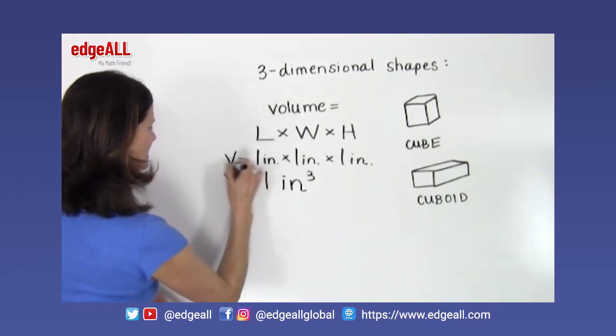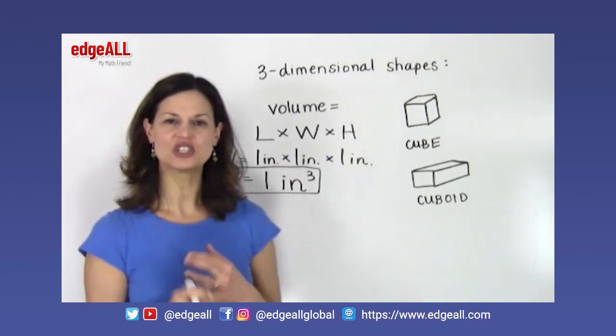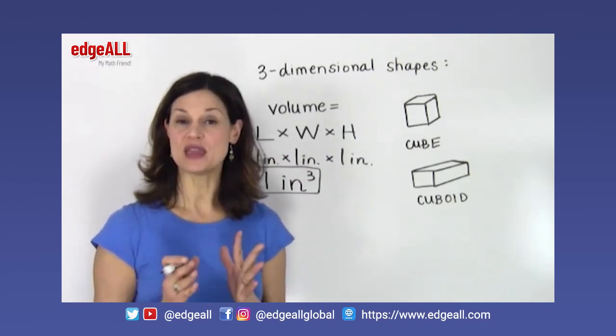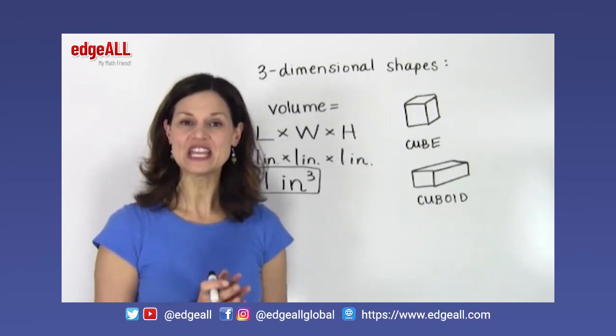And we would say then that the volume of a 1 inch by 1 inch by 1 inch cube would be 1 cubic inch or 1 inch cubed.